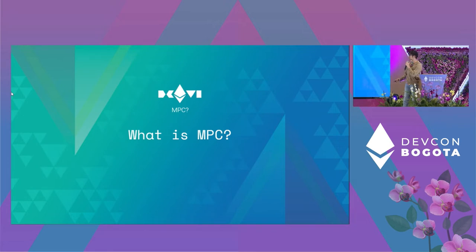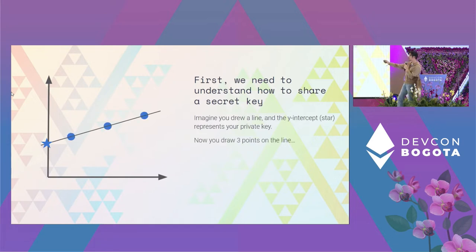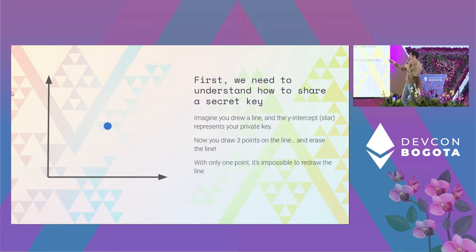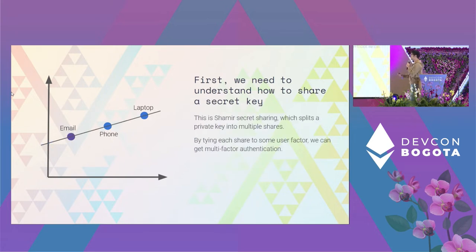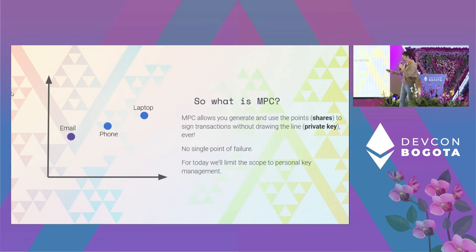Before discussing multi-sig and recovery factors, we need to understand how to share a secret key. Imagine you draw a line and the Y-intercept represents your private key. You draw three points on that line, then erase the line. With only one point you can't redraw the line — any number of lines could pass through it — but with two points you can redraw it and recover your key. This is basically Shamir's secret sharing, which splits a private key into multiple shares, and by tying each share to a user factor we get multi-factor authentication on private keys.